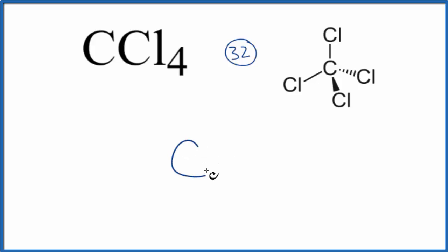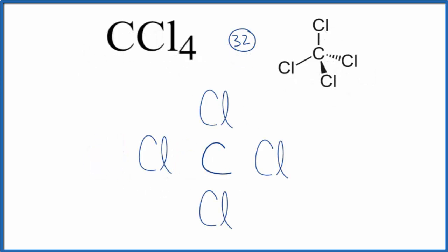At this point we have thirty-two valence electrons. We're gonna put two between the atoms. This will form the chemical bonds between the carbon and the chlorine atoms. We'll use eight valence electrons to form these bonds.